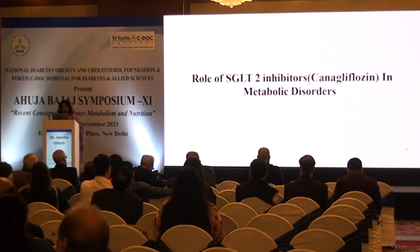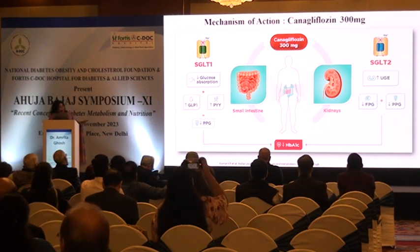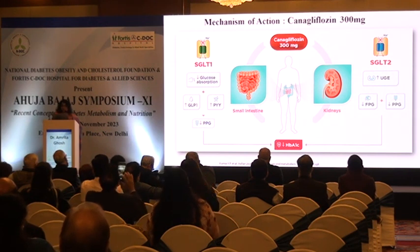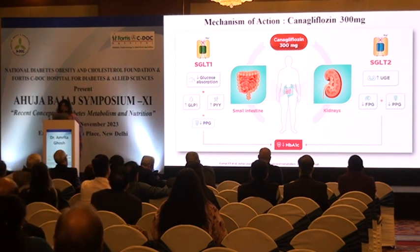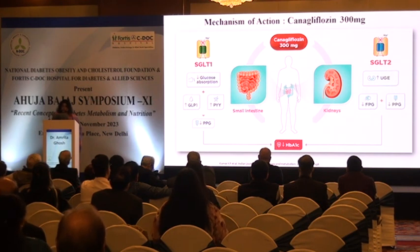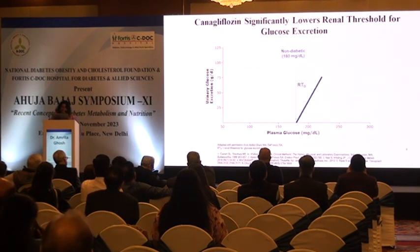Where can you place this molecule SGLT2, and especially canagliflozin, in these kinds of metabolic disorders? This is the mechanism of action of canagliflozin 300. There are two pathways. One is the kidney pathway — 90% of the molecule works through the kidney, inhibiting SGLT2, which increases urinary glucose excretion, beneficially decreasing fasting plasma glucose and post-prandial glucose. The other 10% is via SGLT1 inhibition, present in the small intestine, decreasing glucose absorption, increasing circulating GLP-1 and PYY, which in turn helps decrease post-prandial blood glucose.